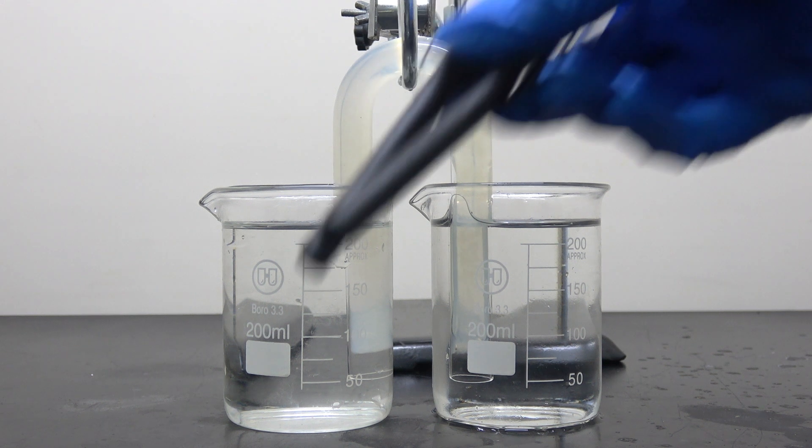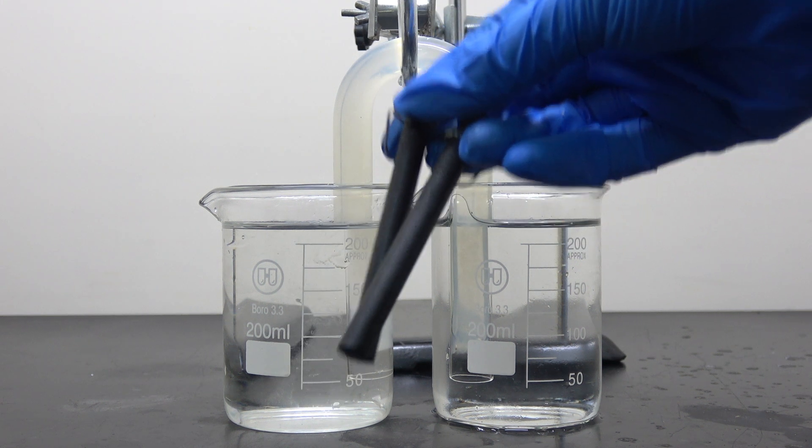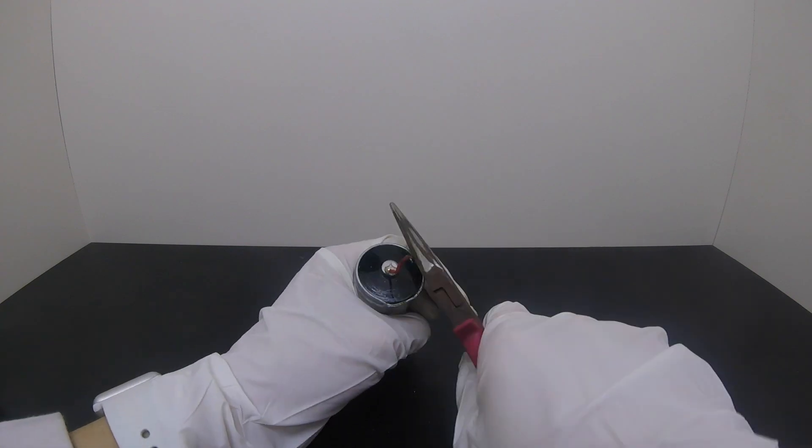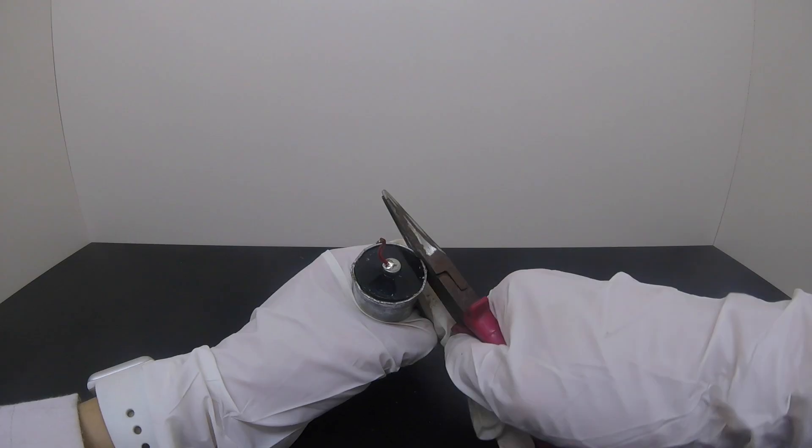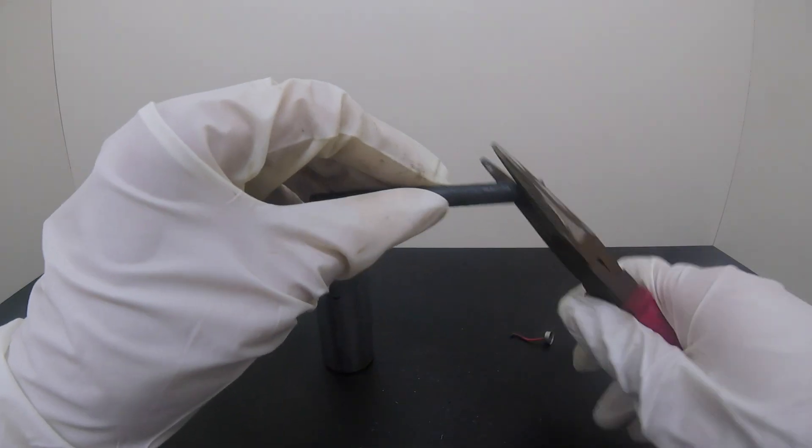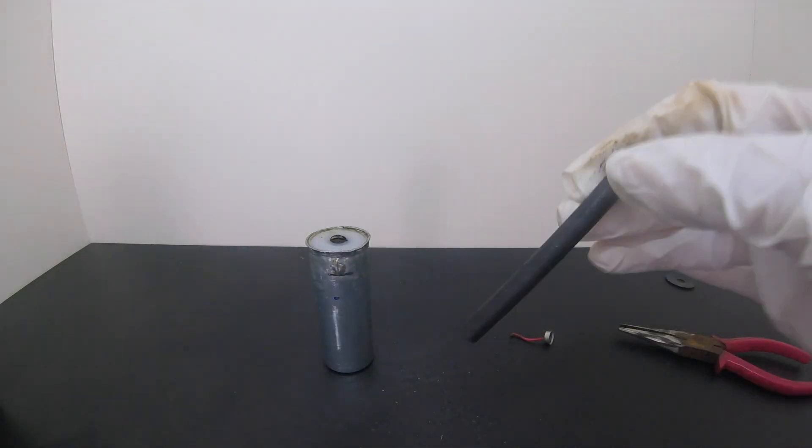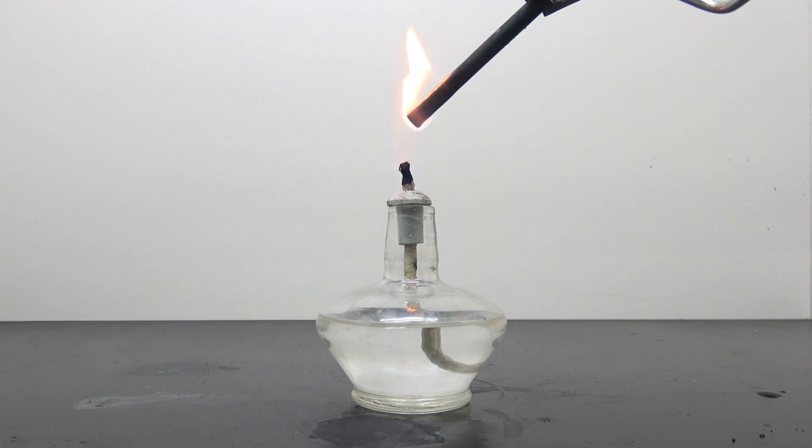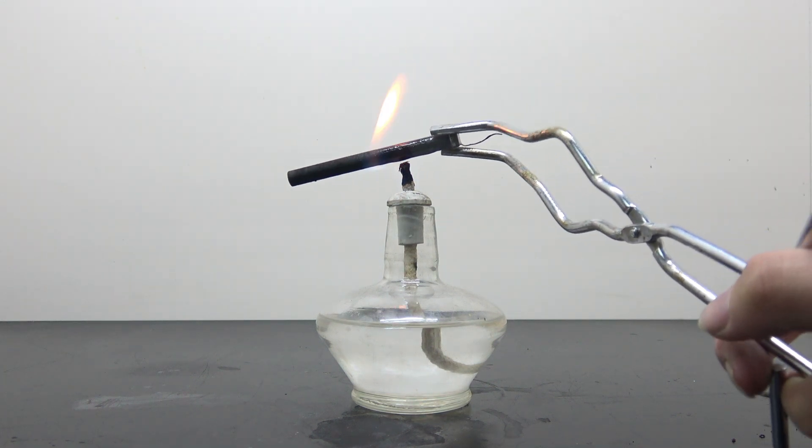Now to get two graphite electrodes, which can be easily obtained by disassembling a zinc carbon battery, as I've shown in one of my earlier videos. Be aware they are coated with some sticky organic material. To remove that, I simply put it on a lamp and let the heat do its job.